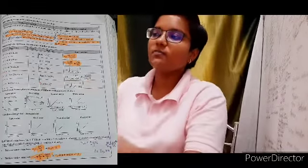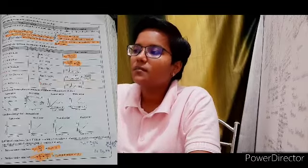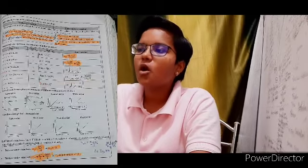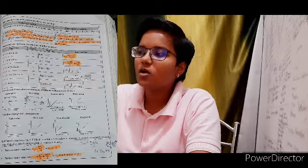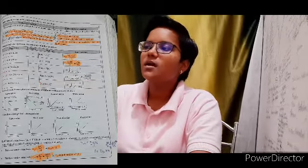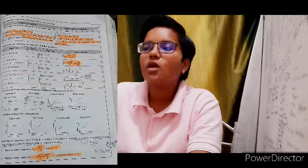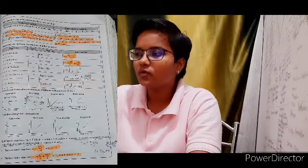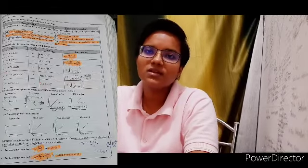Difference between order and molecularity: Order is an experimental quantity and cannot be calculated theoretically, whereas molecularity can be calculated by adding the molecules in the slowest step. Order can be fractional or zero, but molecularity is always a whole number. Order applies to elementary as well as complex reactions, and for complex reactions the overall order is given by the slowest step. Molecularity has no significance for complex reactions.